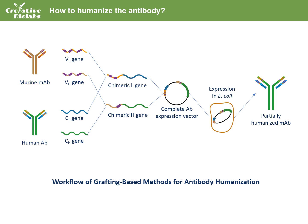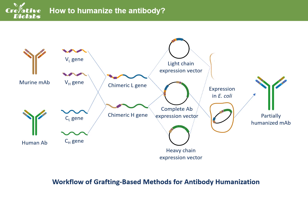Alternatively, the heavy and light chain genes can be cloned into two plasmids. The resulting plasmids are transformed into E. coli, and the antibody light and heavy chains will be expressed from the E. coli and assembled into a complete antibody.